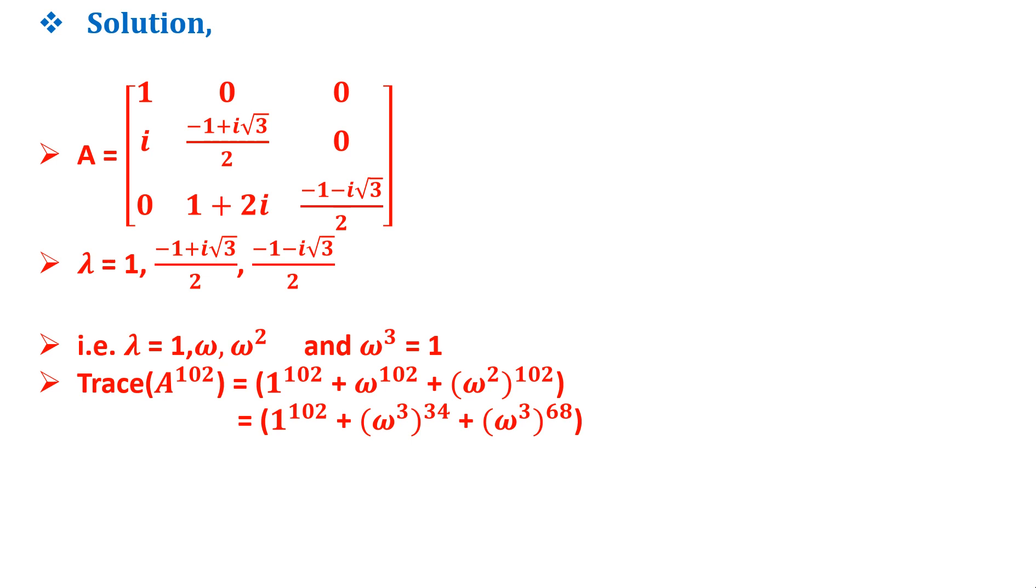This equals 1 raised to 102 plus omega cube raised to 34 plus omega square raised to 68. Here omega square is first multiplied with 102 and then omega cube is taken as common which uses 1 raised to 102 plus 1 raised to 34 plus 1 raised to 68, which implies that the trace is 3.